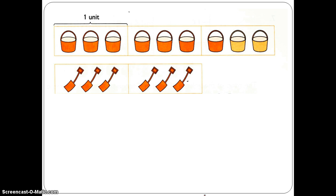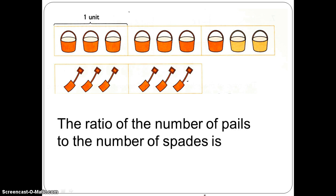Let's look at the diagram. The ratio of the number of pails to the number of spades is 3 is to 2. Is this the actual number of pails and spades? No. 3 is to 2 is the relative size. The actual number of pails is 9 and the actual number of spades is 6.